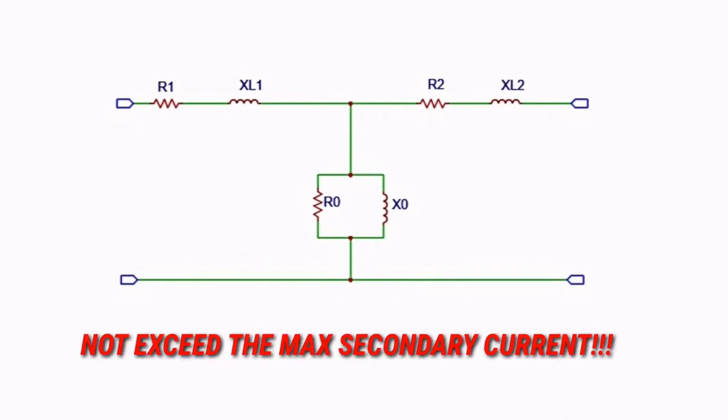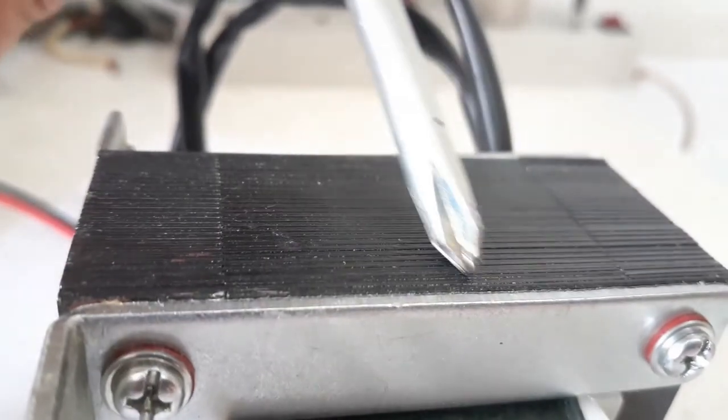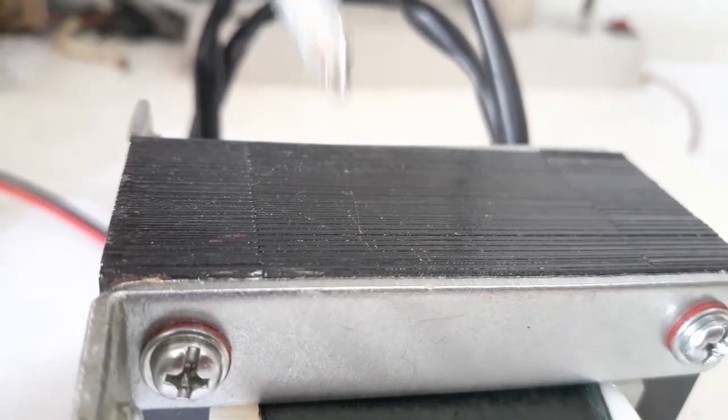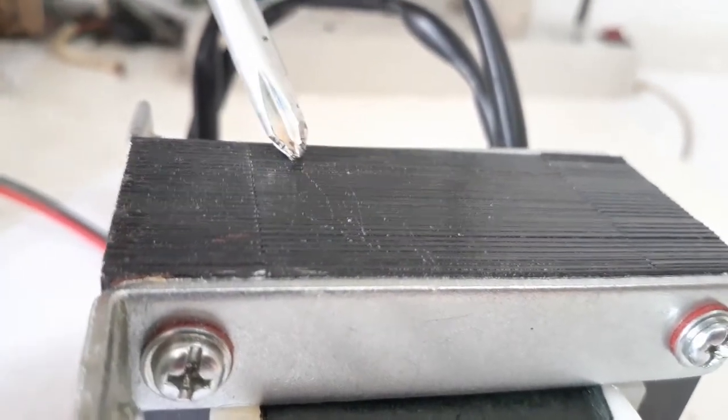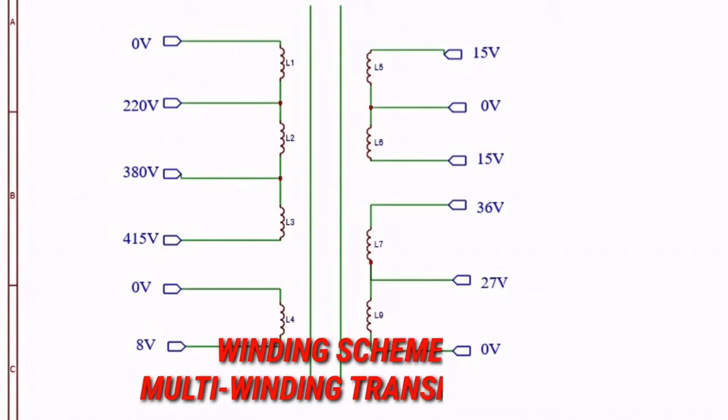we must not exceed the KVA rating by applying a load that draws more current than the rated secondary current. Secondly, eddy current losses can be prevented by using laminated sheets or a varnish. In our multi-winding transformer,